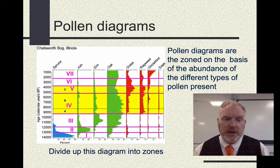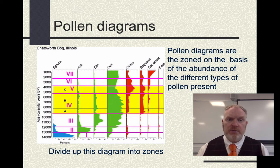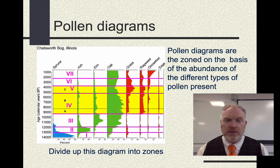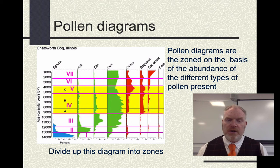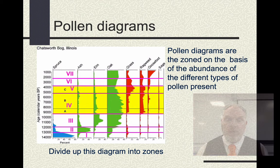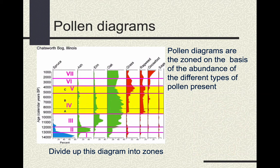The final zone then, from 2,000 years ago up to about the present. We see oak as the dominant tree, but with other herbs at that time. Clearly, this is a record of climatic warming over this time period.